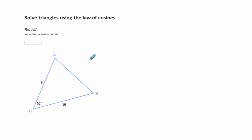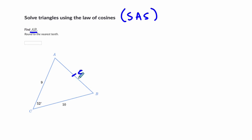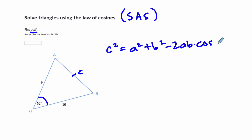In the first example, we're given side-angle-side. We are asked to find side AB, and I'm calling that little C because it's across from angle C. So C squared equals A squared plus B squared minus 2AB times the cosine of C. I'll write down the values — it usually helps. A is 9, B is 10.